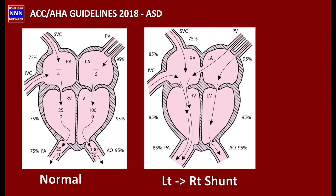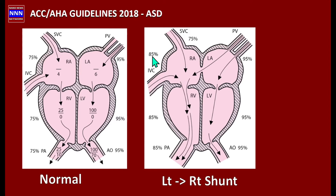Historically, in the 1980s and 90s during cardiac catheterization, we used oxygen saturation to determine the Qp:Qs ratio and shunt direction. Normally, the right side of the heart has an oxygen saturation of 75–76%, while the left side — pulmonary veins, left atrium, left ventricle, and aorta — is around 95%. In patients with a left-to-right shunt, a step-up in oxygen saturation from the superior or inferior vena cava to the right atrium indicates an atrial septal defect.